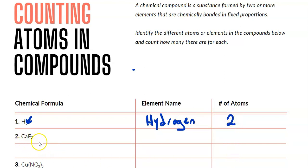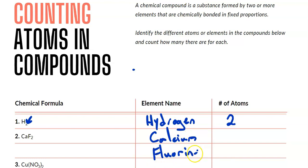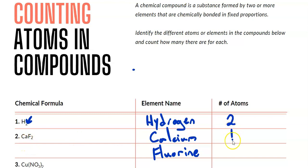If we go down to the next one, we have calcium and fluorine. Now, there's no number written next to calcium. A lot of my students like to say there are no calcium, but if there wasn't any calcium, I wouldn't have written the symbol in the first place. For example, zinc — there's clearly no zinc because I didn't write zinc. So when we don't have a subscript, that represents one atom. So we have one calcium, and next to fluorine we have two fluorines.